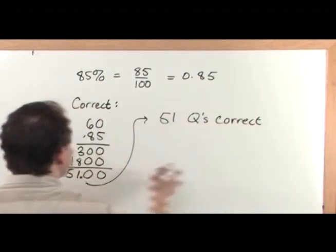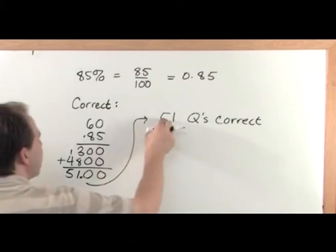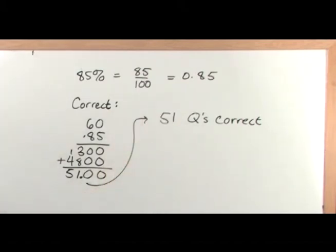Because you can ignore any zeros after a decimal point. So I got 51 correct. But the question doesn't ask that. It says, how many did he miss?